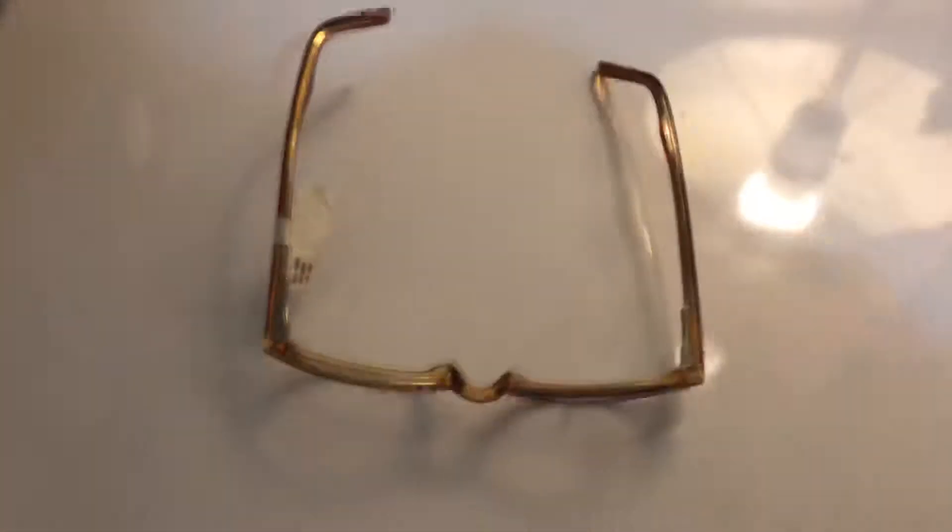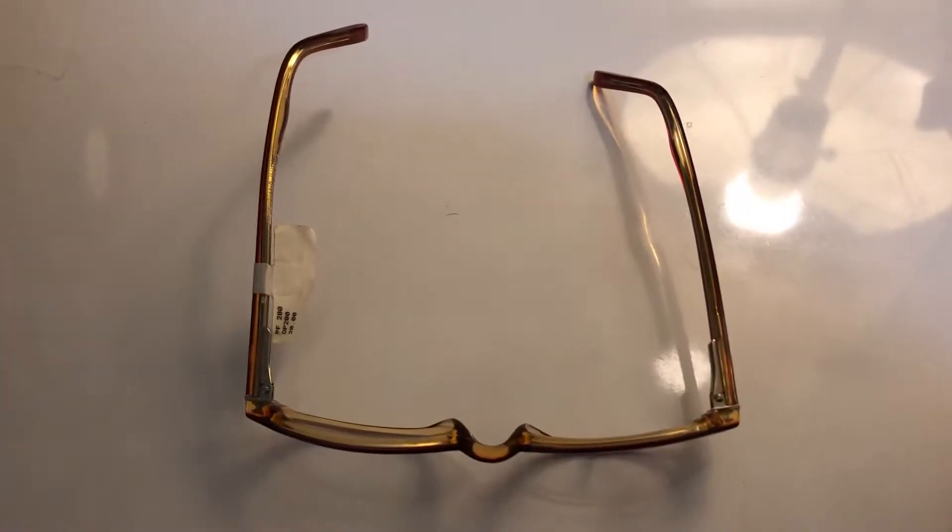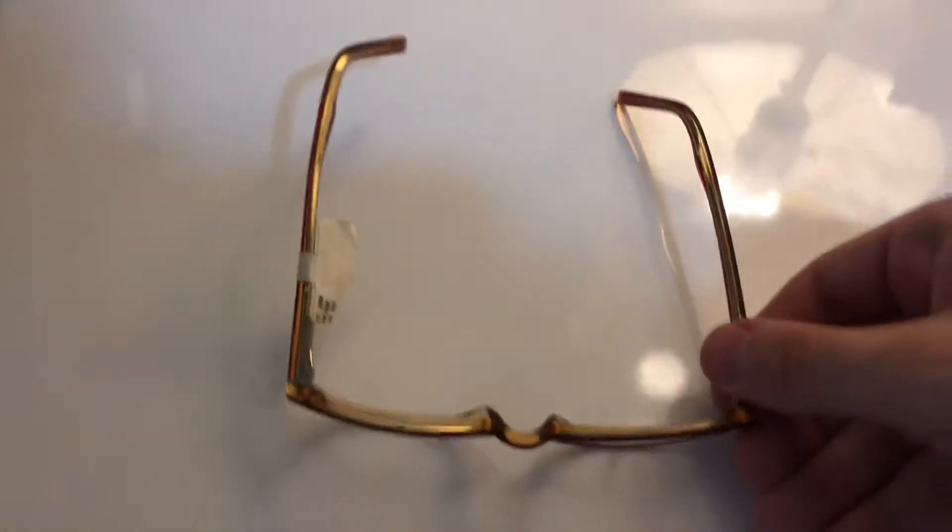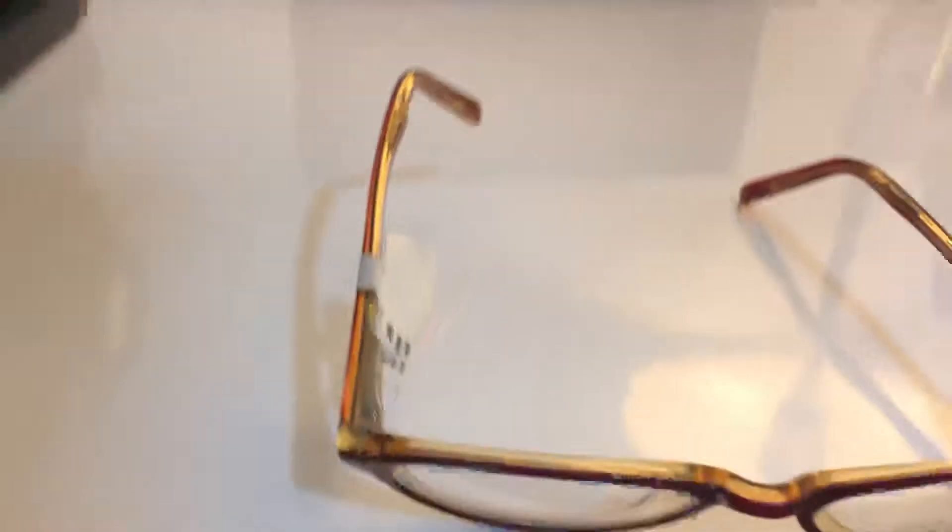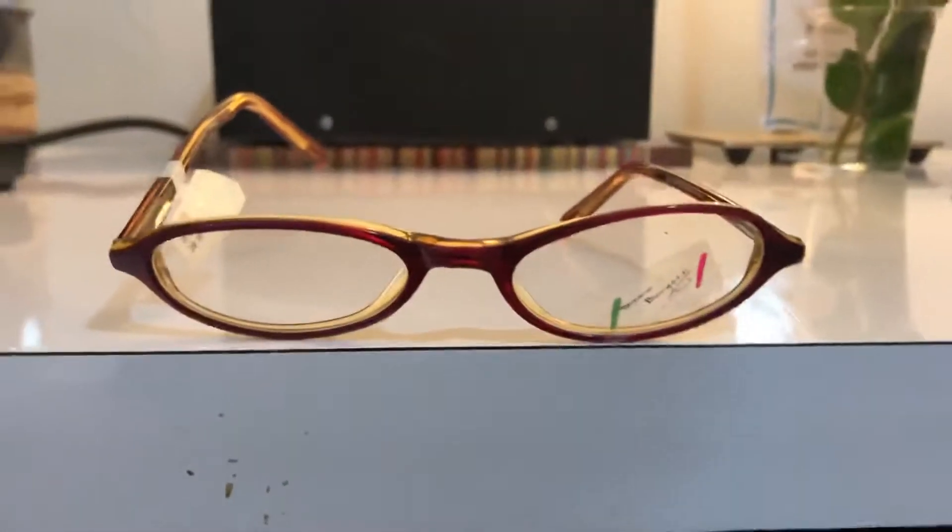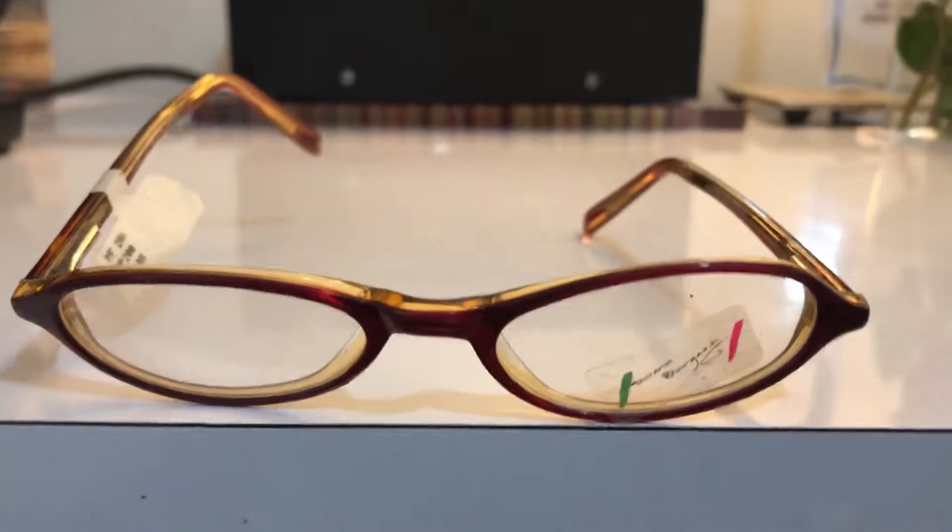So I'm going to adjust these glasses. The first thing that we do to start with is the bridge. So I'm going to bring it to the edge of the table. As you can see, these glasses both don't reach the edge at the same.